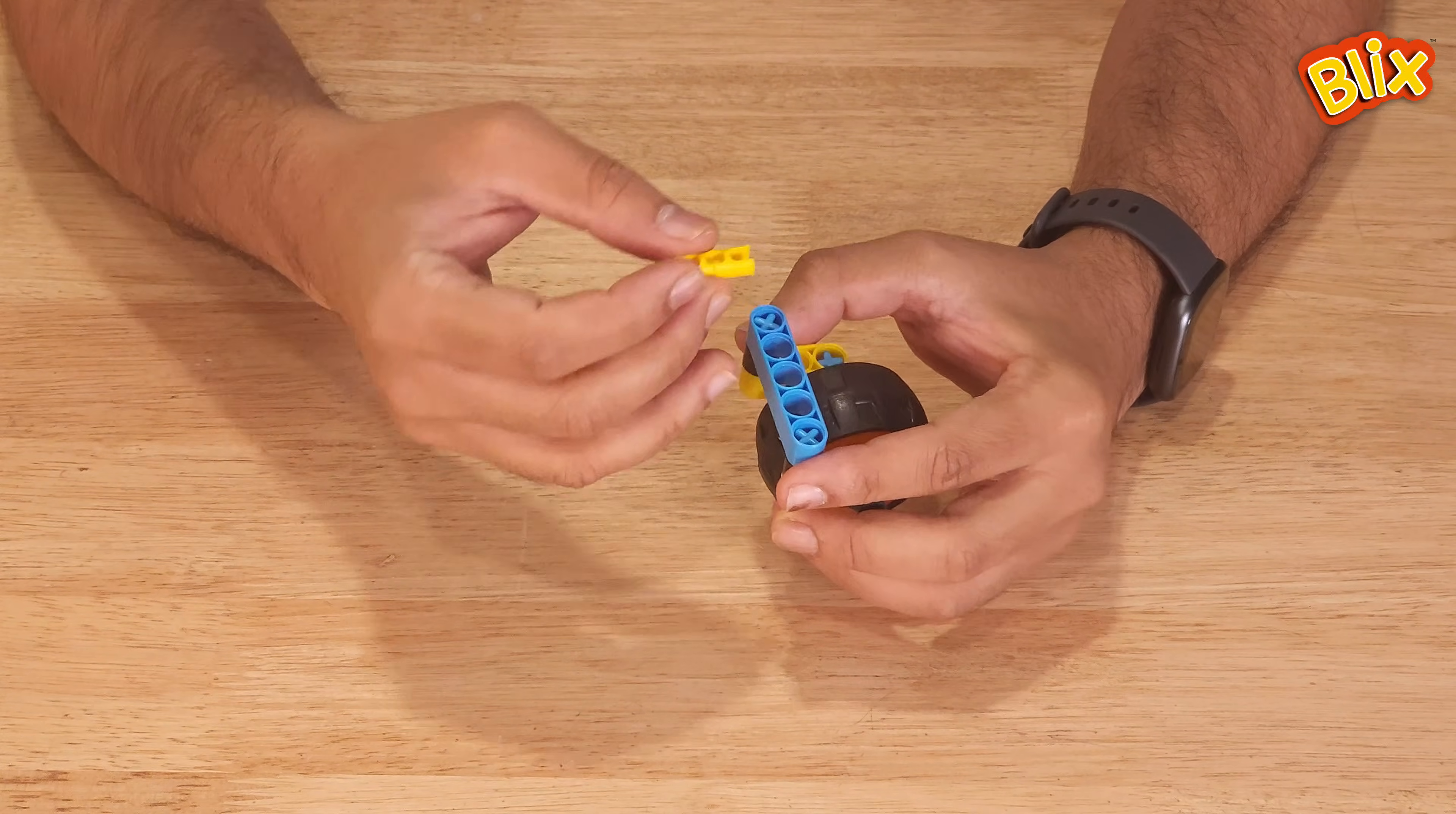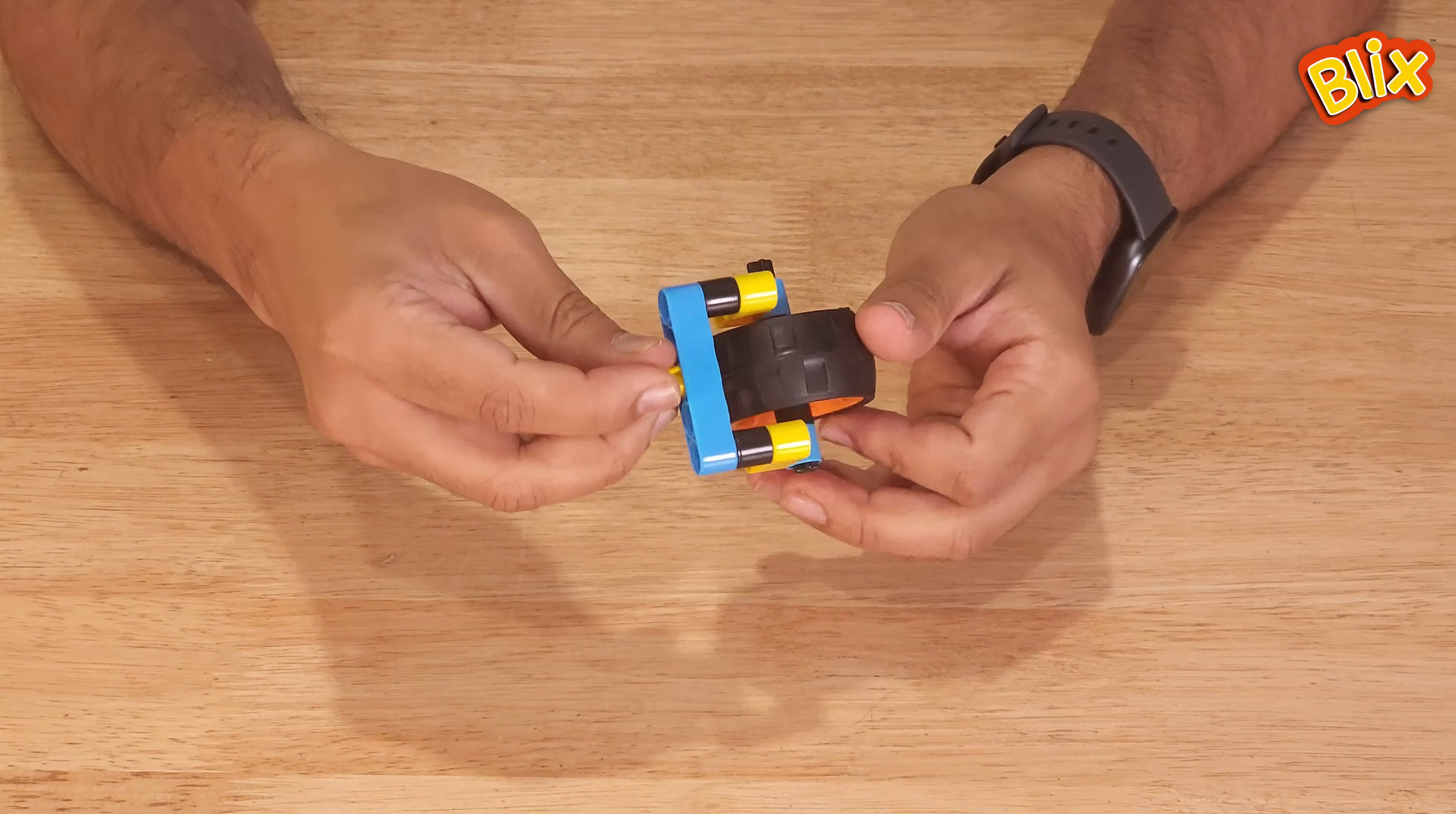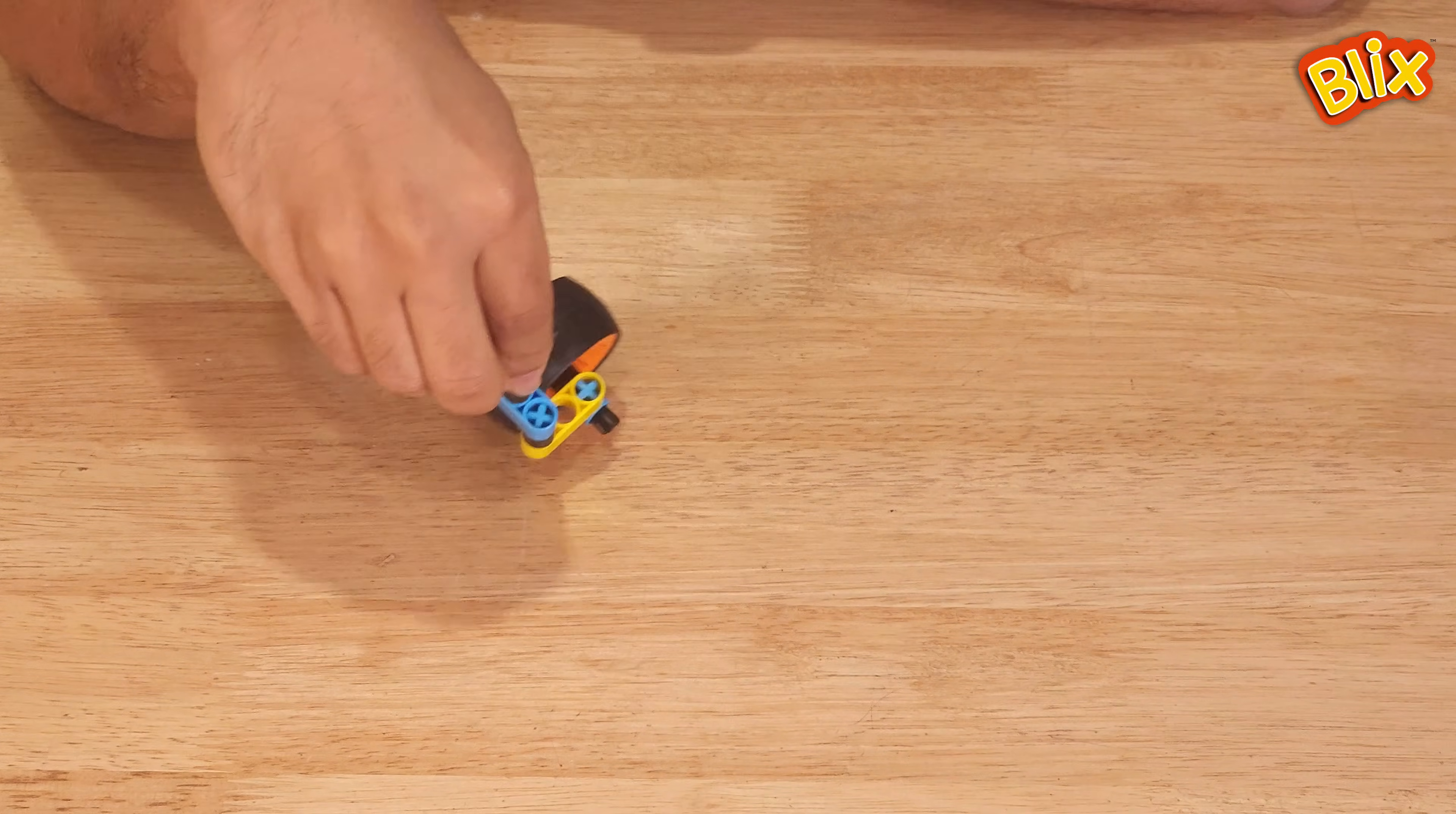You have this one CL2 left. Attach it at the center of P5 like this. You can see that your caster wheel is ready. And you can see that it can rotate freely. And it can rotate in any direction that you want.